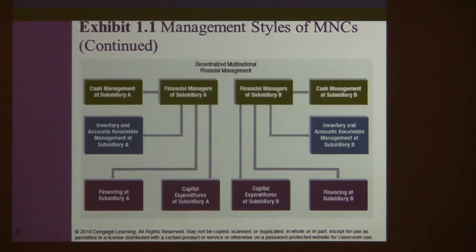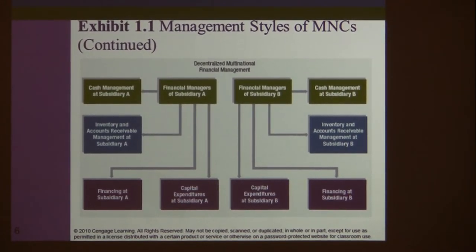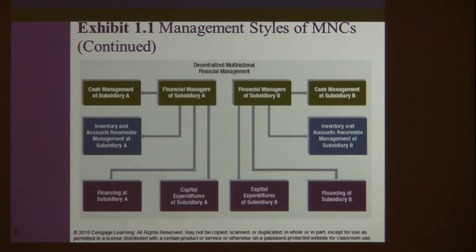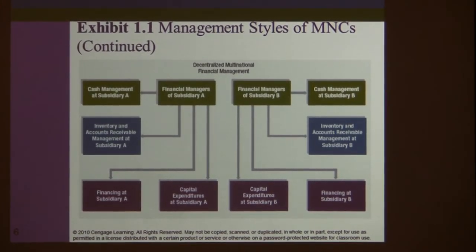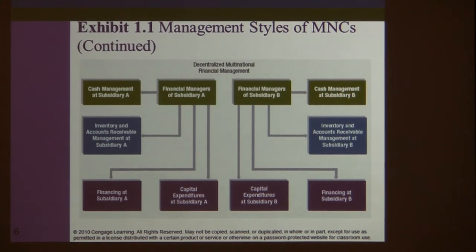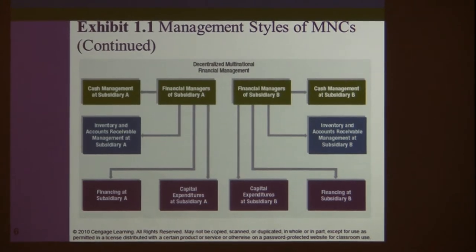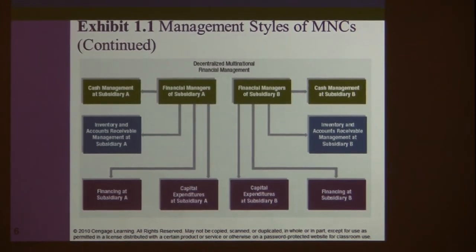For example, the parent company might say that investment decisions up to $10 million can be made by the subsidiary, but beyond that must be approved by the parent. This way, subsidiaries have a certain level of independence while the parent company still has control and can manage overall risk.